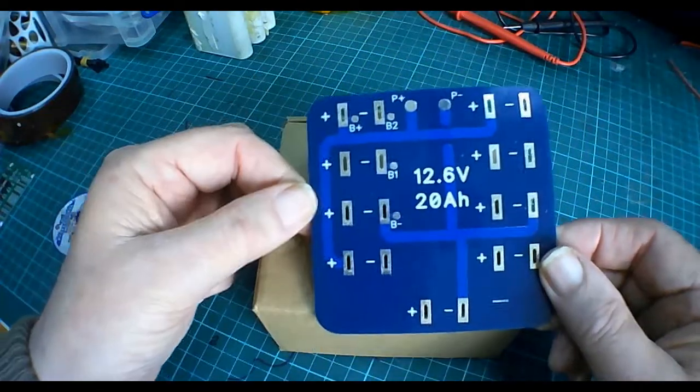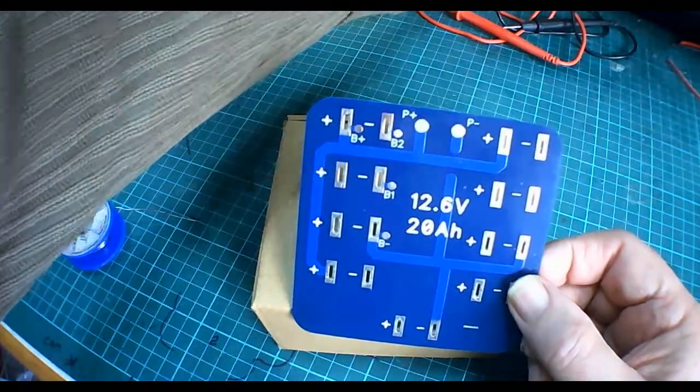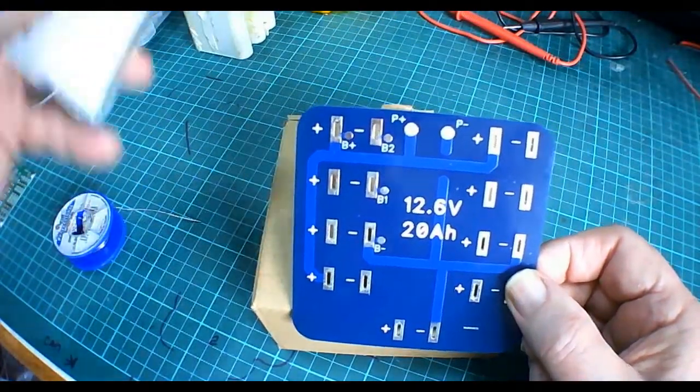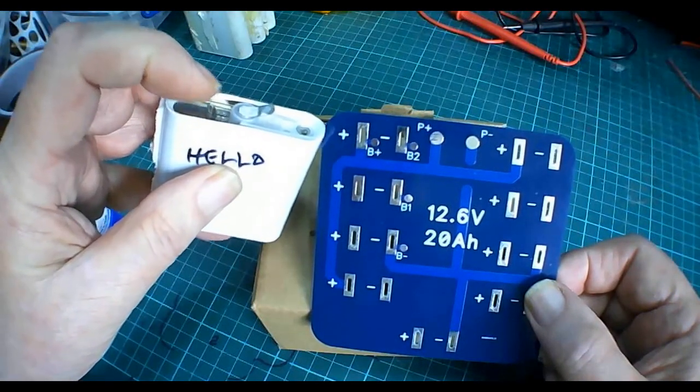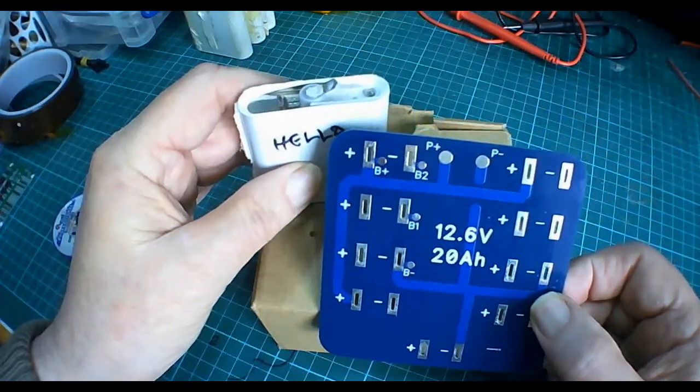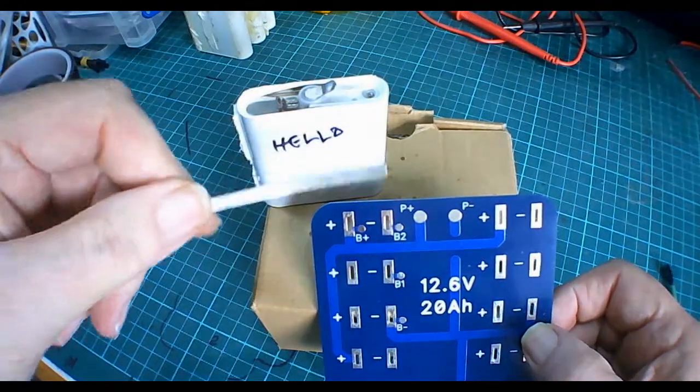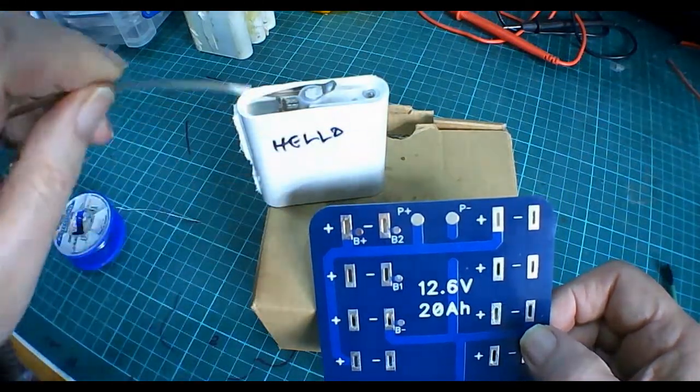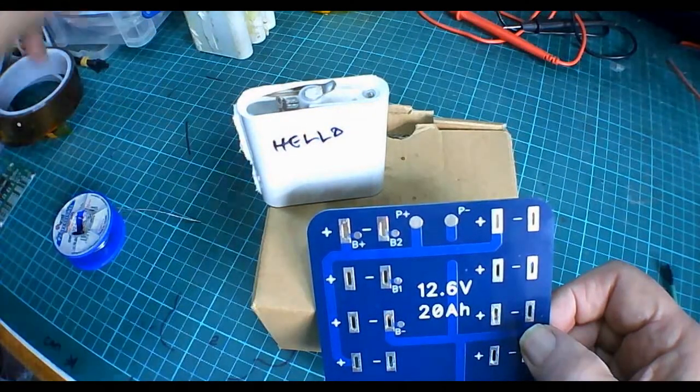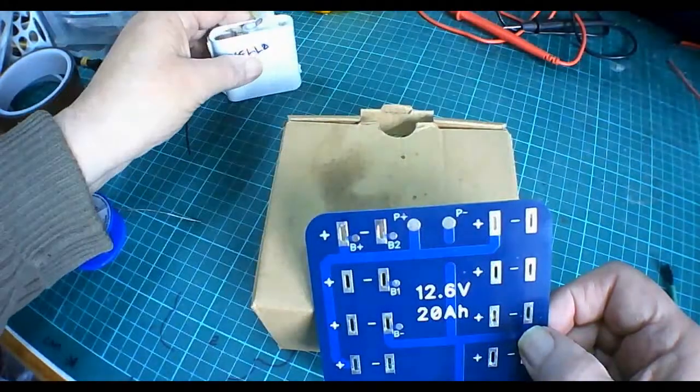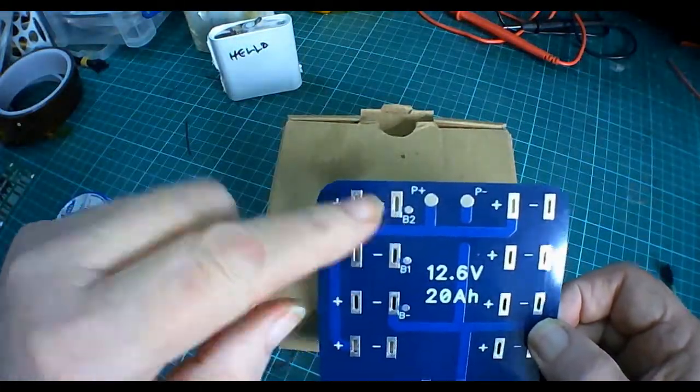It just means that I only have to solder a piece of nickel strip. So I'm going to connect onto the negative here. And then that brings me up a tab to connect onto the negative over here on the PCB.